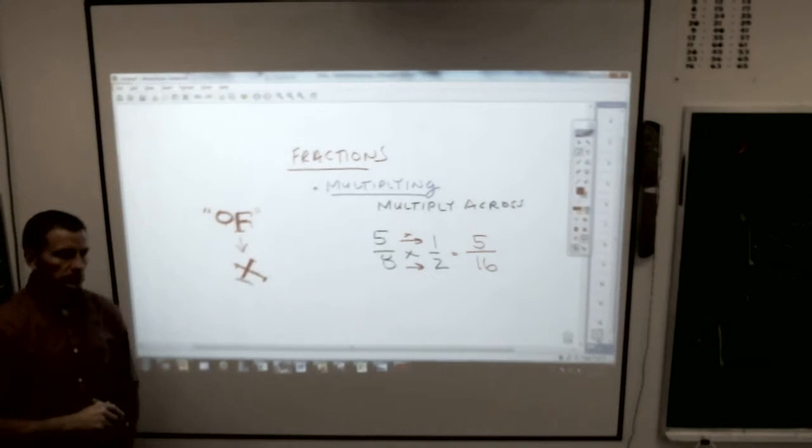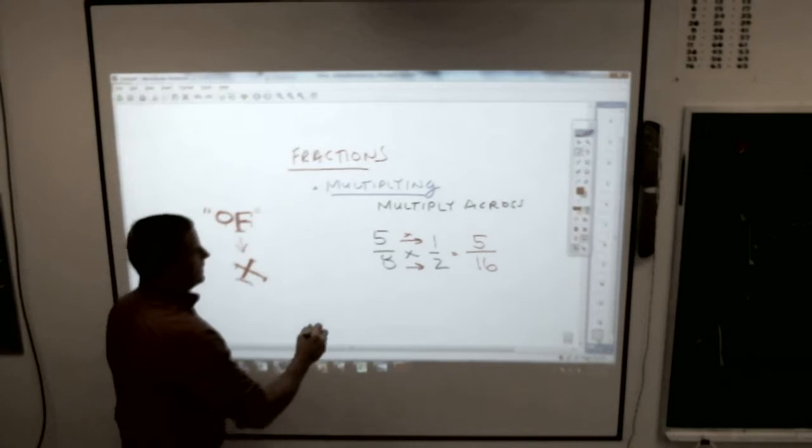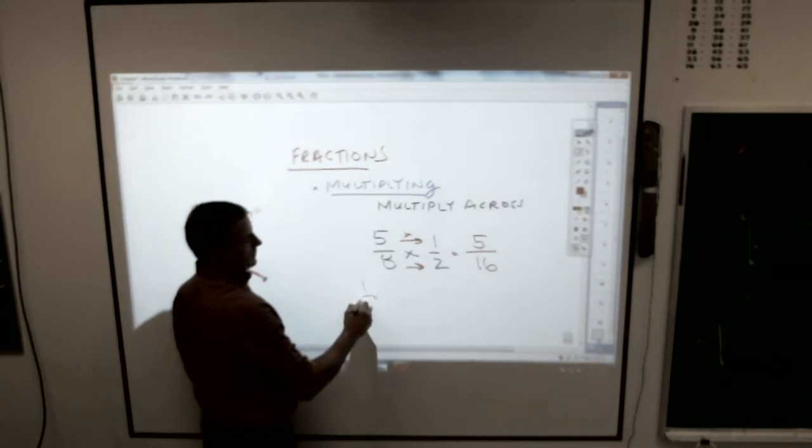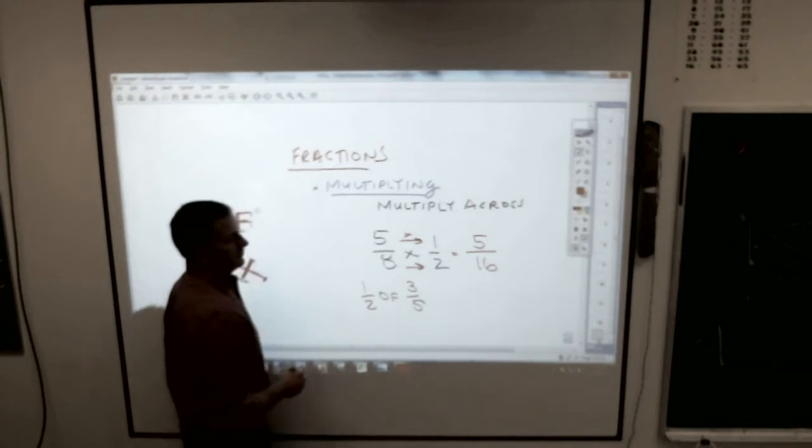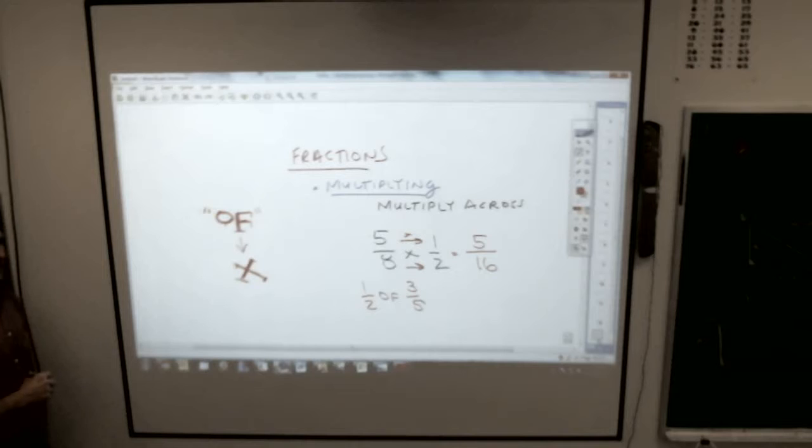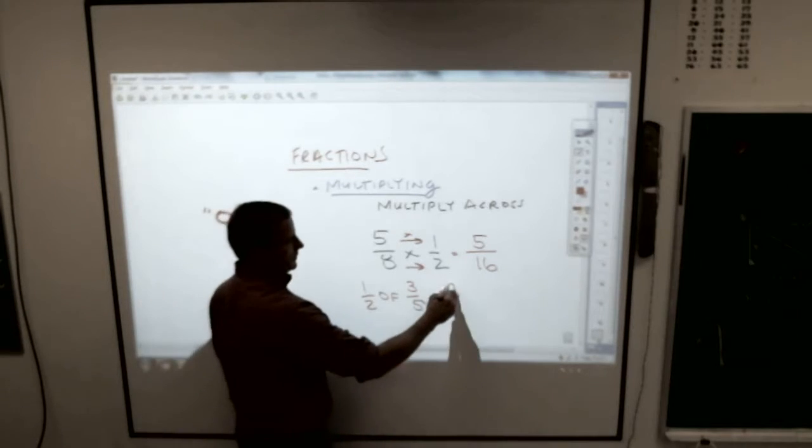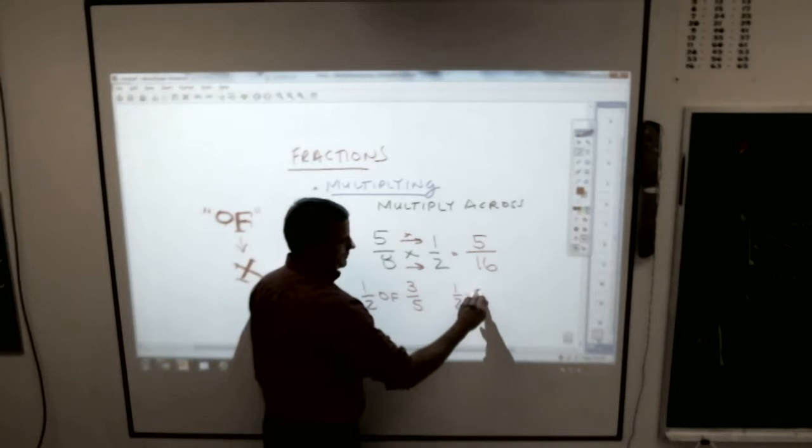So, if I asked you, what is half of three-fifths? To get that answer, it would just simply be one-half times three-fifths.